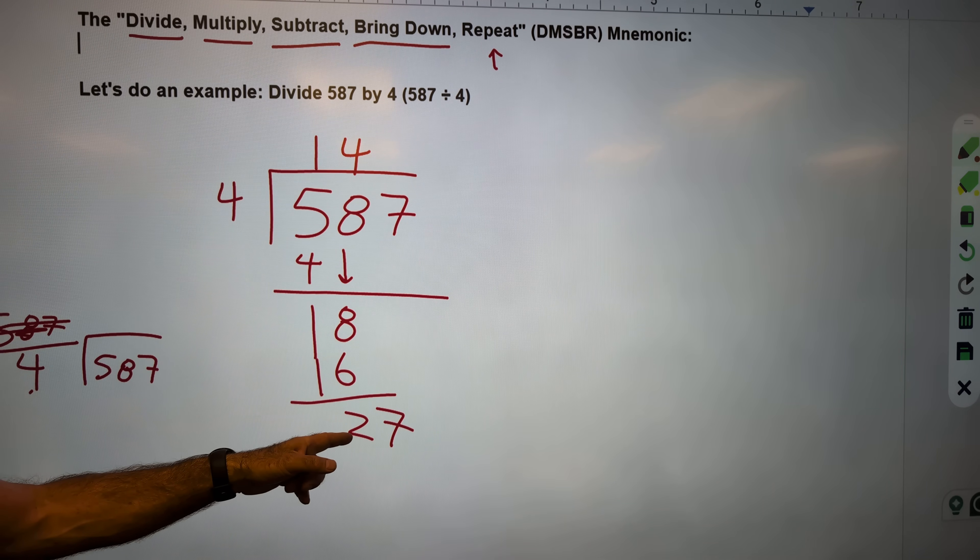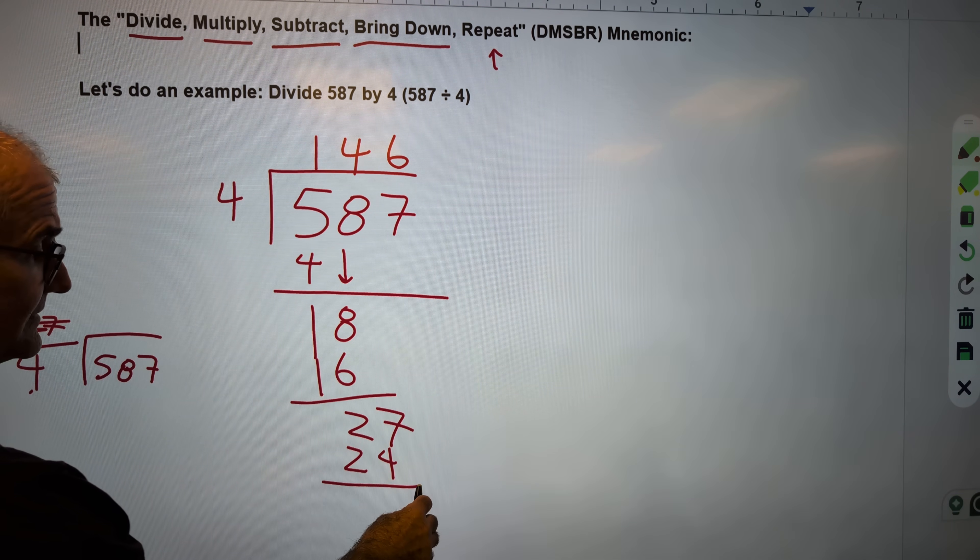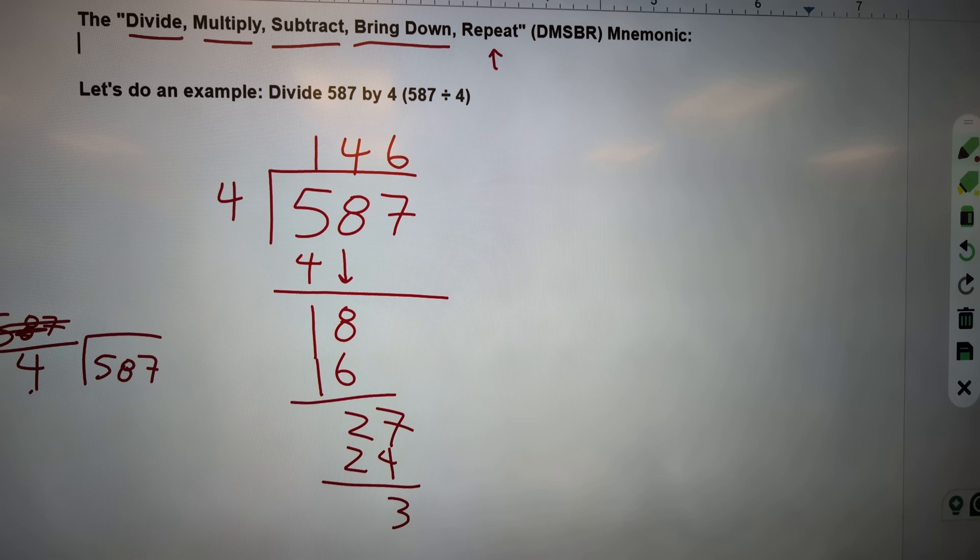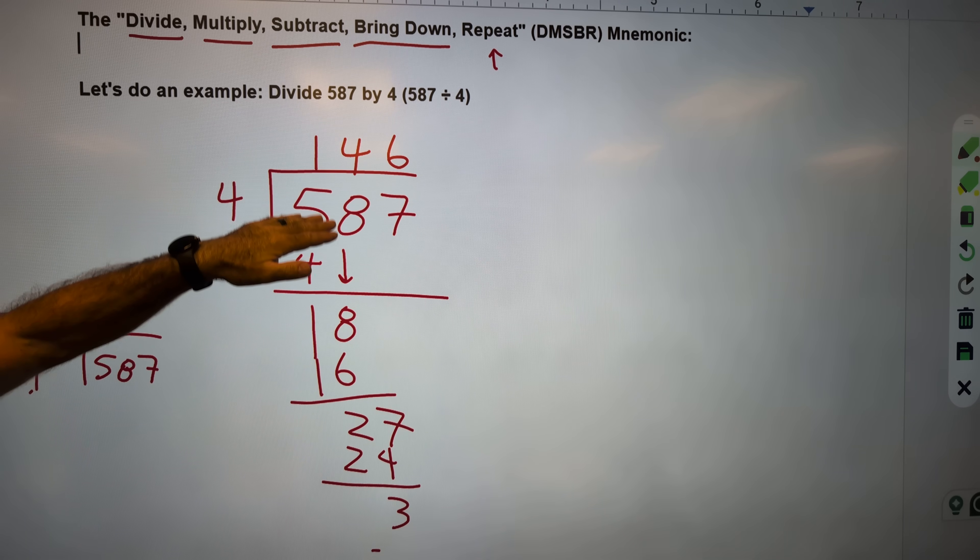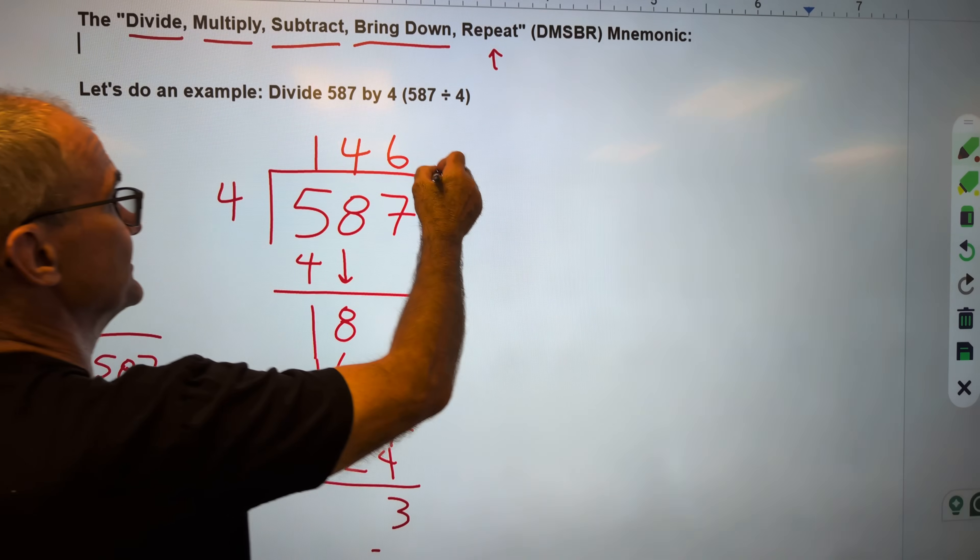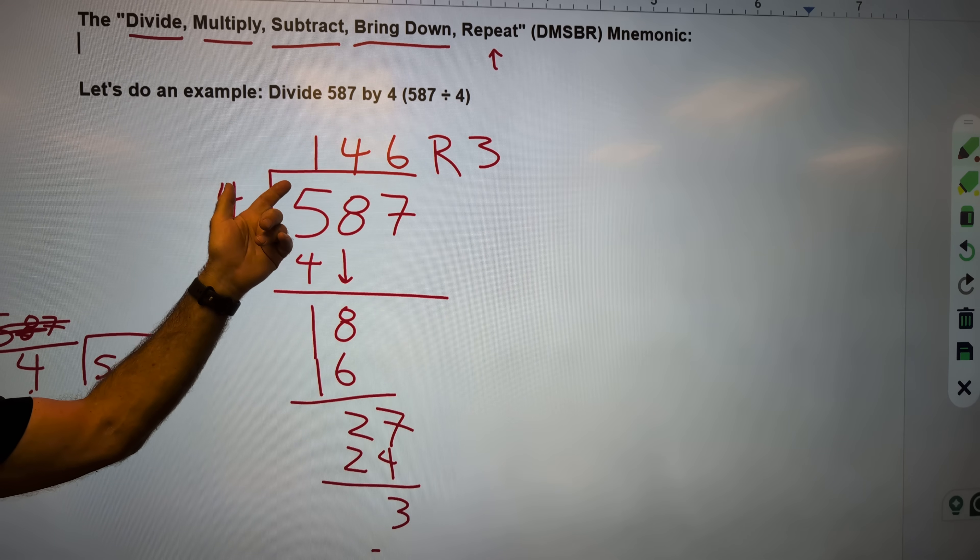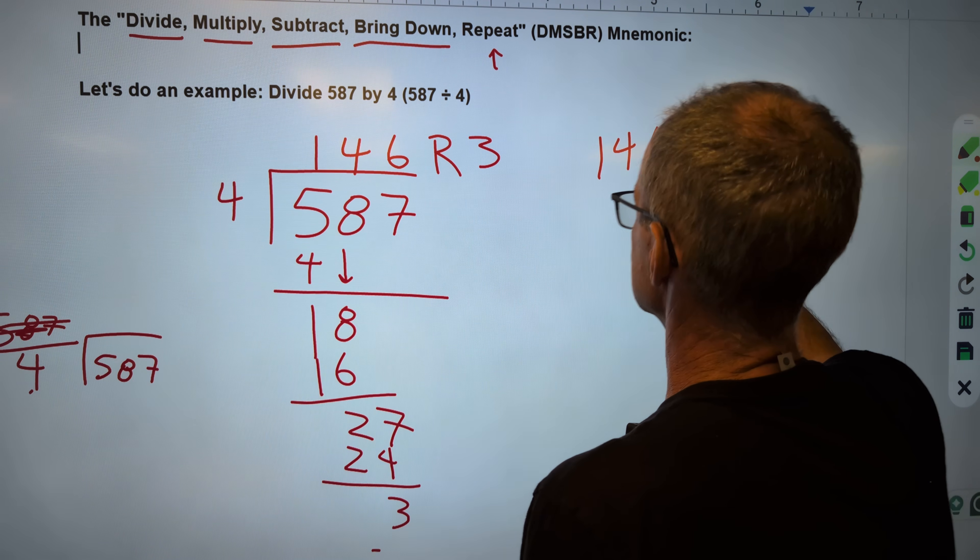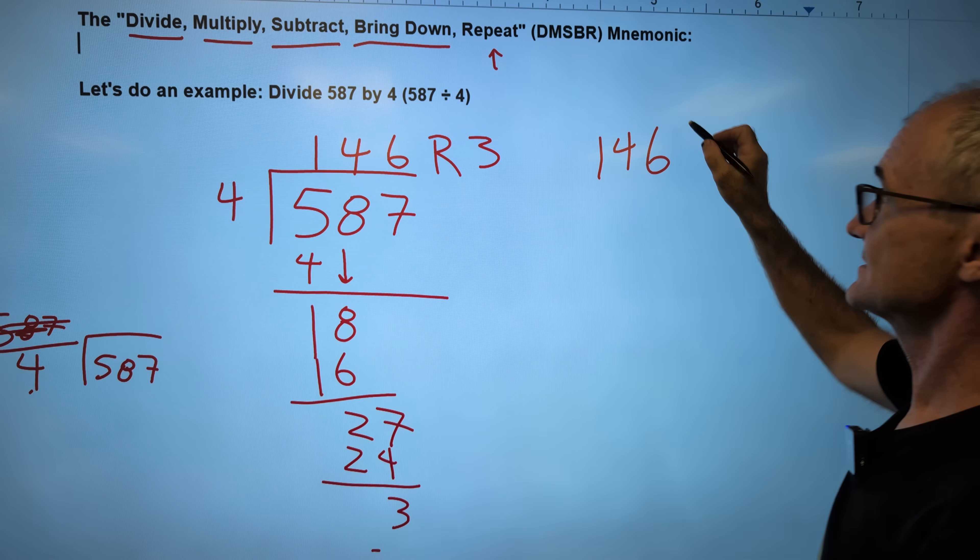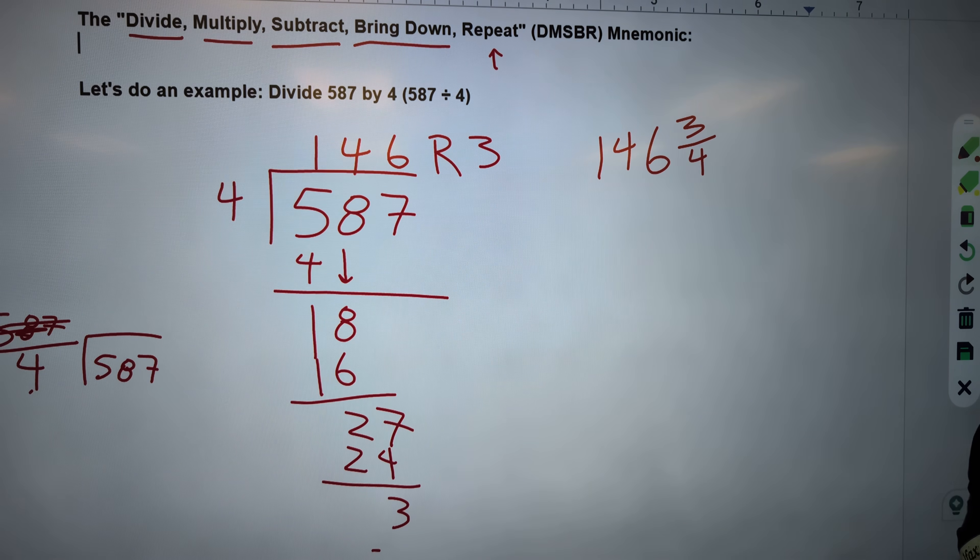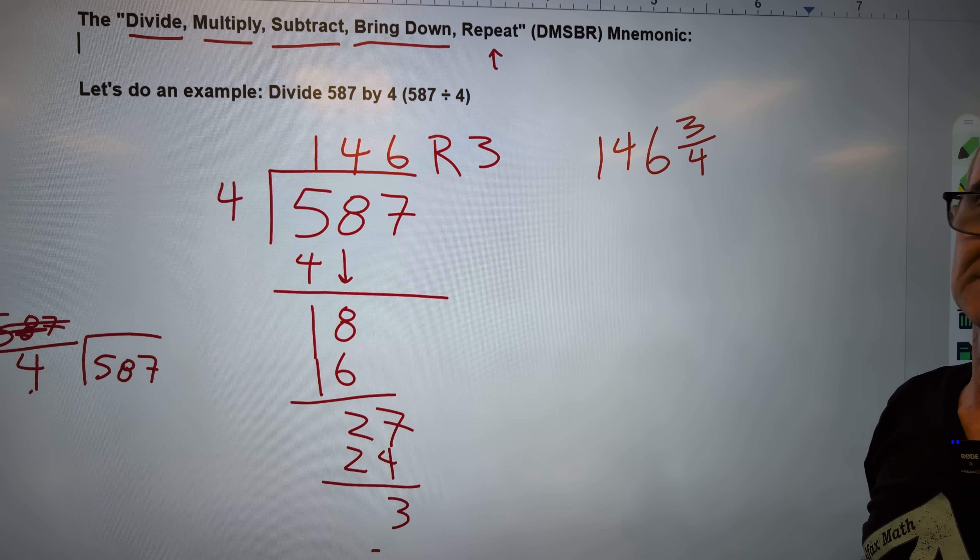4 into 27. 4 times 6 is 24. Subtract. 3. Bring down. There's nothing to bring down. So I have a remainder of 3. I could say 4 goes into 587, 146 times with a remainder of 3. That's one way to do it - pretty uncommon way. Another way is to say it went in there 146 times with 3 left over. 3 won't go into that 4. 3 is a portion of that 4. So, 146 and three-quarters. Probably a better way than the remainder of 3.